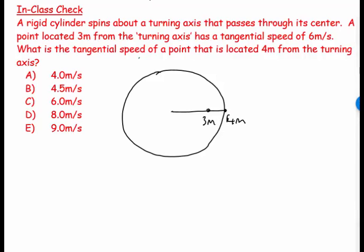Let's take a point that's 3 meters and another point that's 4 meters. And these are two points on a rigid cylinder. So what happens is at a certain time they move around, and let's go like that.